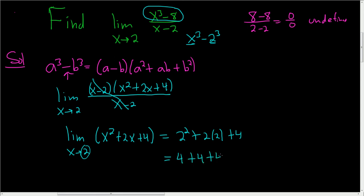And this is 4 plus 4 plus 4, which is 12. And that is the limit as x approaches 2 of the quantity x cubed minus 8 all divided by x minus 2.